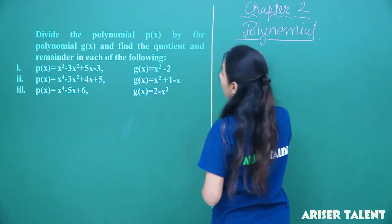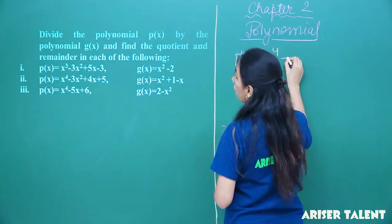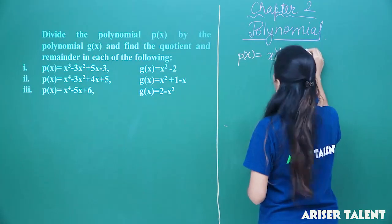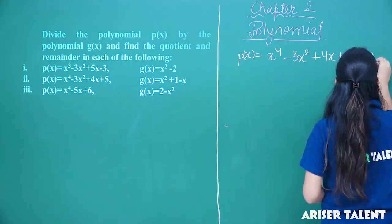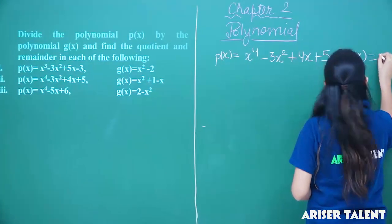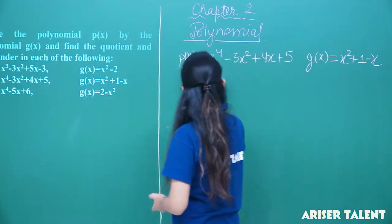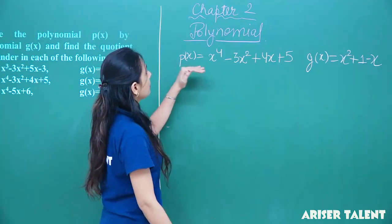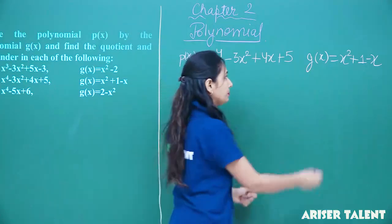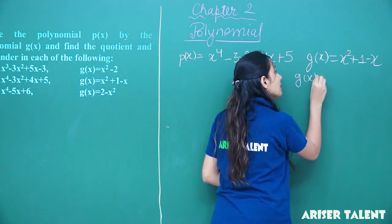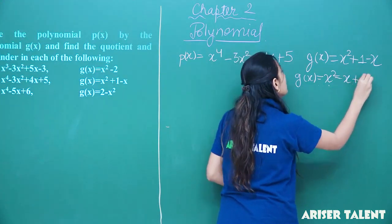We have p(x) equals x to the power 4 minus 3x squared plus 4x plus 5, and d(x) equals x squared plus 1 minus x. This is not in standard form, so let us change this and write it as x squared minus x plus 1.